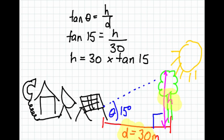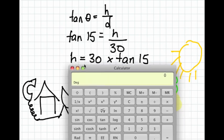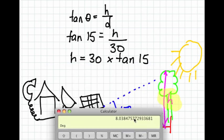So we go and grab our calculator, and we need to do 30 times tan 15. So we're going to do 30 times, on this calculator we have to press the 15 first, before the tan. Press equals, there you go. Our tree is approximately 8 meters high.